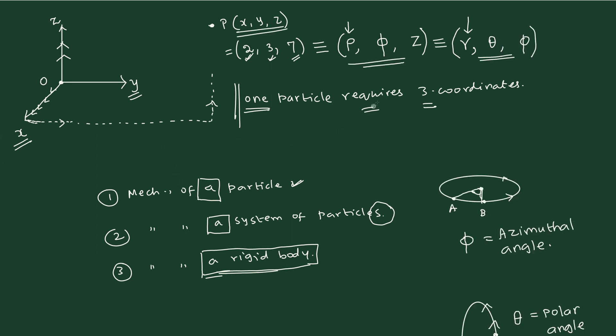Our conclusion is that irrespective of whatever coordinate system that you are going to use, one particle requires only three numbers. So we make a conclusion that if this is the situation, suppose if you are going to have n number of particles, how many coordinates are required?